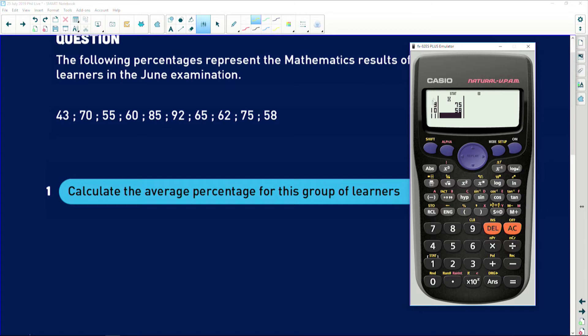And what's handy is you can see how many numbers you've inputted over here. So we know we have 10 data points. If you haven't reached 10, you've missed something. So now you press AC, which means that all of your data is stored in the calculator.